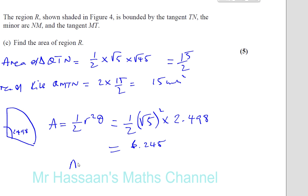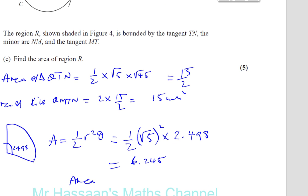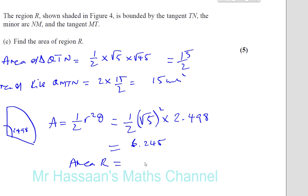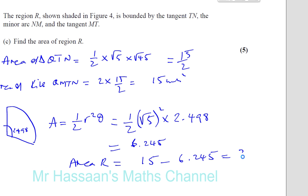So if I take away from my 15, the required area, the area which is marked R, the area of R is going to be 15 minus 6.245. So you have 15 take away your answer, which gives you 8.755. They didn't tell us how to round it, so we should best round it to 3 significant figures, which is 8.76 units squared.